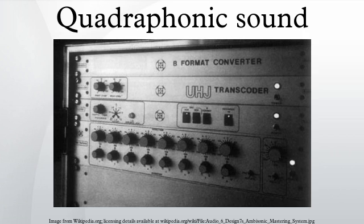Quadraphonic Sound, similar to what is now called 4.0 Surround Sound, uses four channels in which speakers are positioned at the four corners of the listening space, reproducing signals that are independent of one another. Quadraphonic audio was the earliest consumer product in surround sound, and thousands of quadraphonic recordings were made during the 1970s.